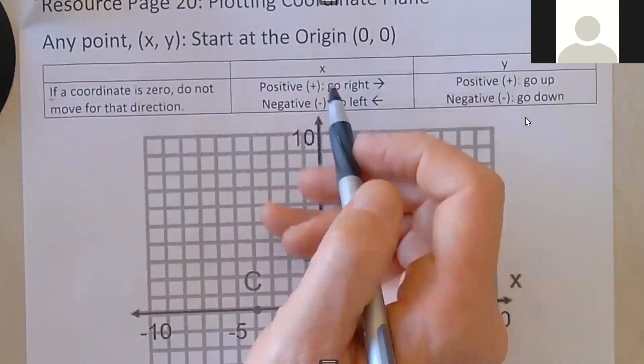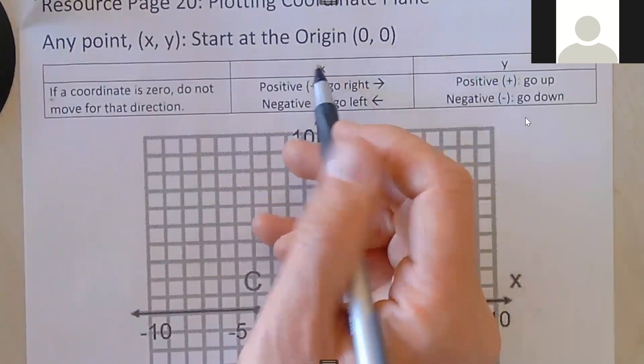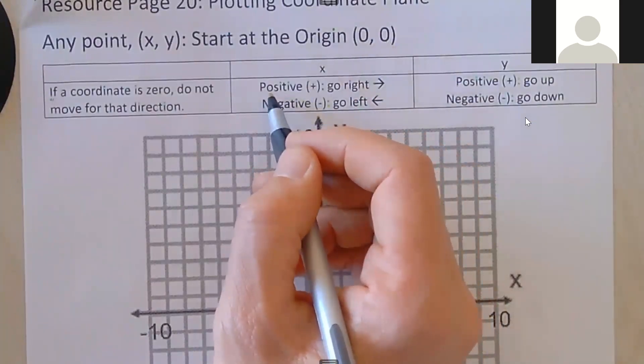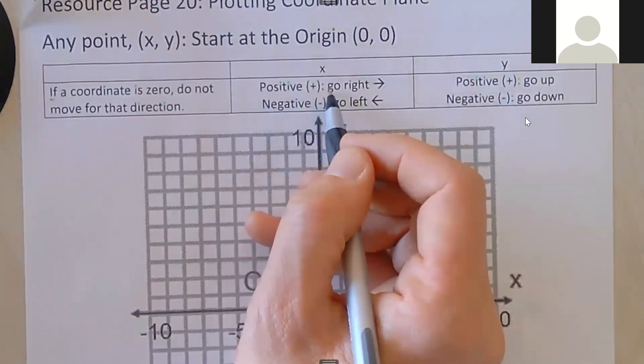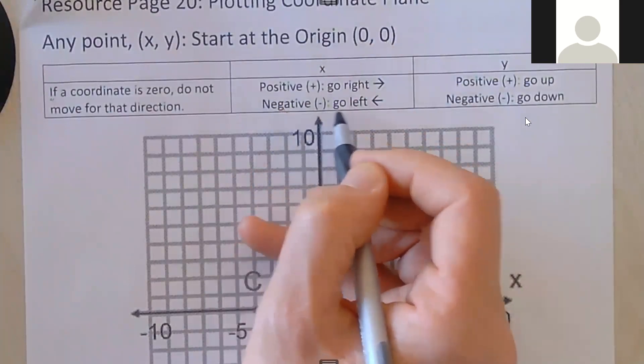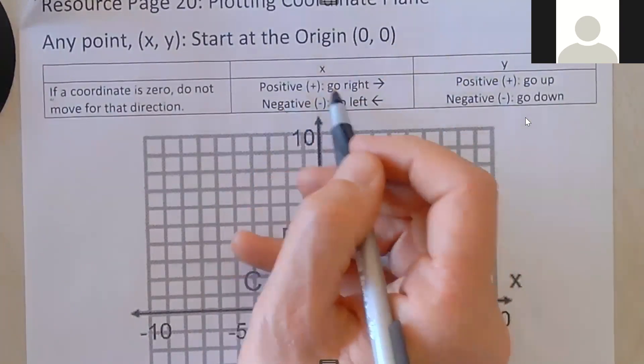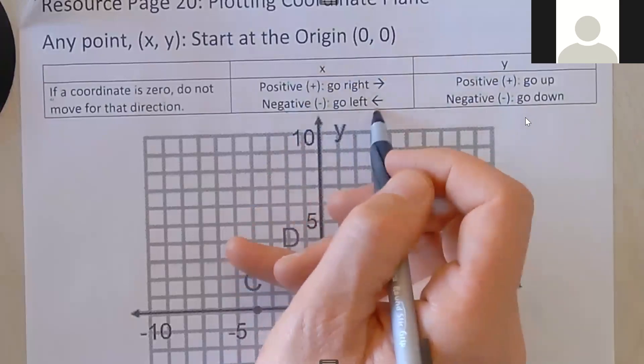Mark, could you read about x? Exactly. If the x value, the first number, is positive, go to the right. If it's negative, go to the left.